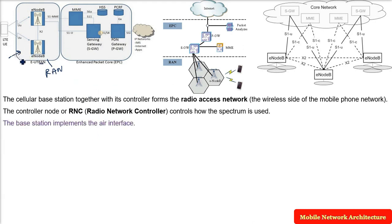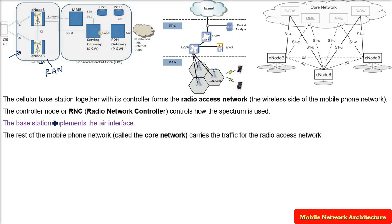The base station implements the air interface. The rest of the mobile phone network is called the core network, which carries the traffic for the radio access network. So the architecture is: Radio Access Network → RNC → Core Network.